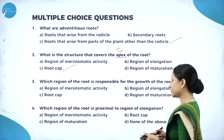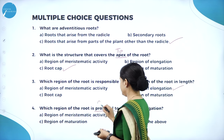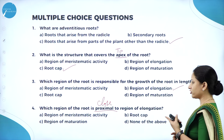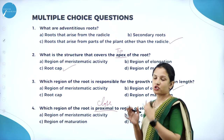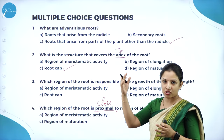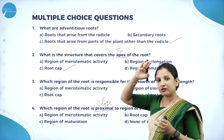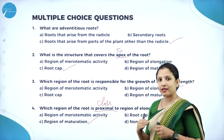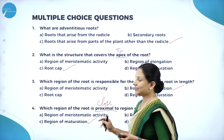Which region of the root is proximal to the region of elongation? Proximal means close. The region of elongation lies between the region of meristematic activity and the region of maturation. Going from bottom to top, the one that is close to the region of elongation is the region of maturation, because these elongated cells next tend to mature. Option C is the right answer.